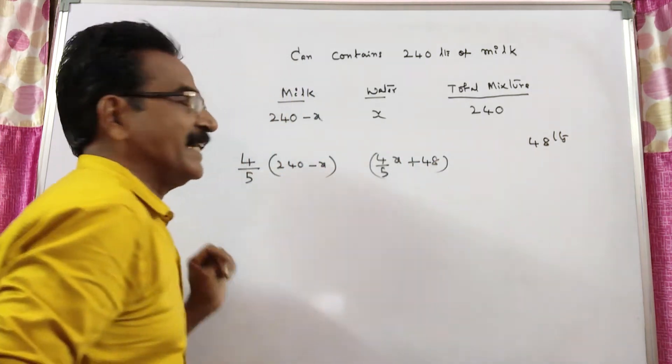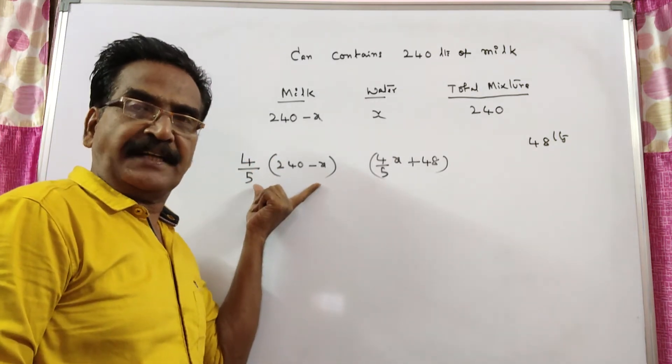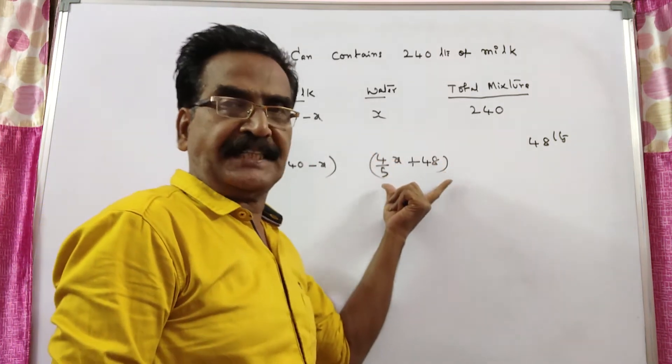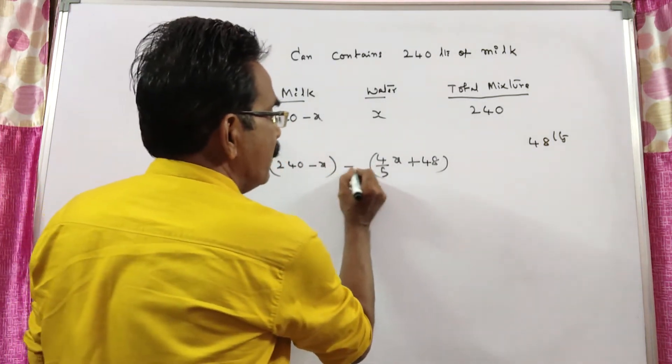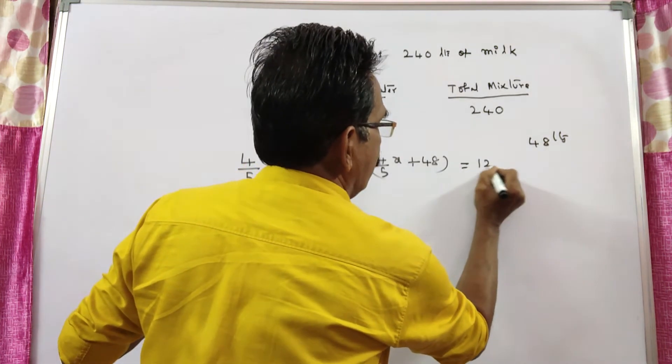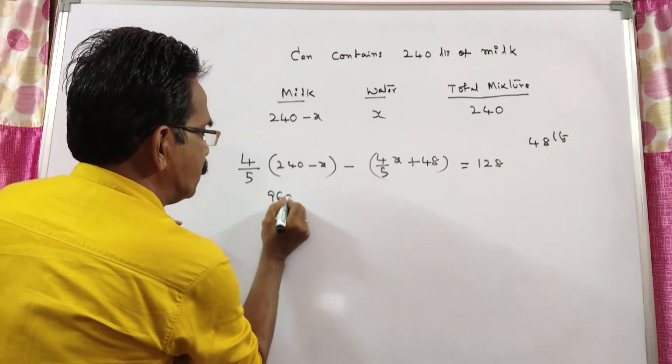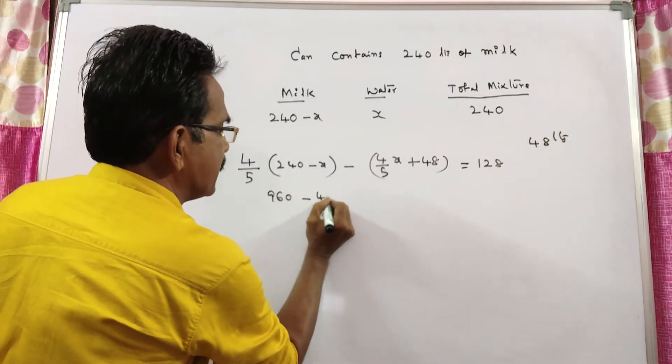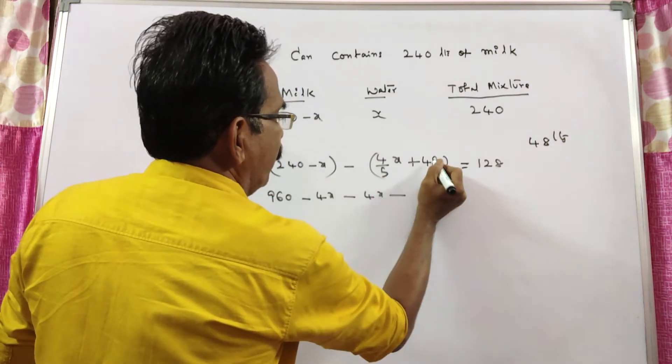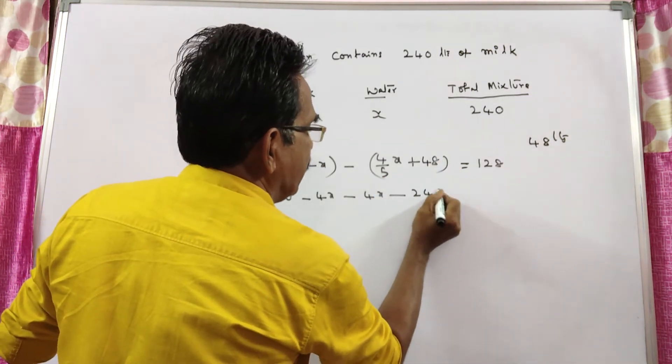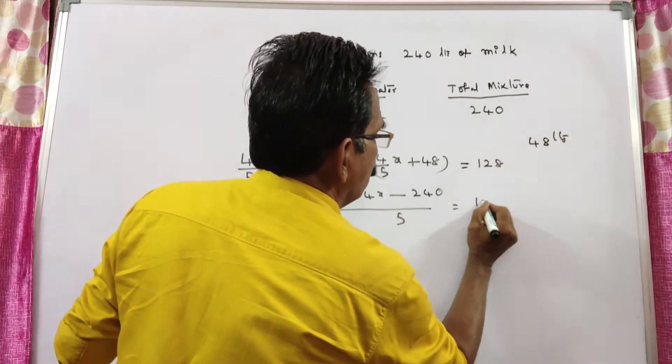So now the resultant mixture, this is the quantity of milk, this is the quantity of water, and it is given that the difference between these two is 128 liters. See, 4 into 240 is 960 minus 4x, minus 4 by 5 of x plus 240 by 5, is equal to 128.